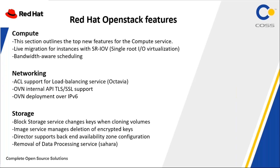For networking, you have ACL access for load balancing services — this is Octavia. The Red Hat OpenStack Platform load balancing service Octavia now supports IP Access Control Lists to limit incoming traffic. For storage, we have block storage service with key changes when cloning volumes, image service management of encryption keys, and director support for backend availability zone configuration. Also the removal of the data processing service named Sahara. These networking and storage features were added in OpenStack version 16.